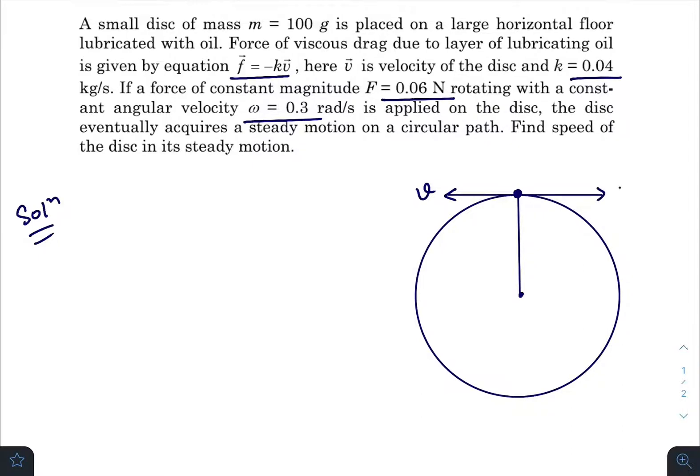That means the frictional force will be in this direction. The centrifugal force will be away from the center at radius R. But here radius is not given, so we will write it in the form of omega and V. So that will be M times omega times V, because R equals V divided by omega.